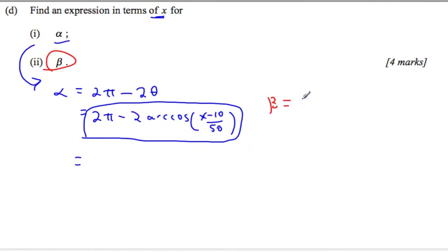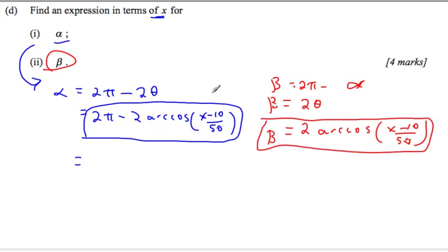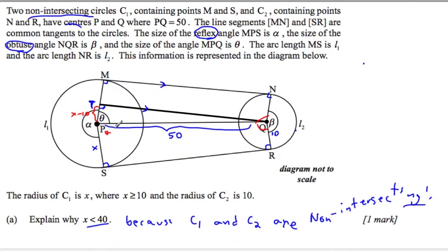So that tells us that this is simply 2 αs, because it comes from the fact that it's 2π minus α. So β is 2π minus α, which is the same as 2θs. That is this part here, so 2 arc-cos of x minus 10 over 50. Now you have expressions in terms of x for both α and β, which will help us out.